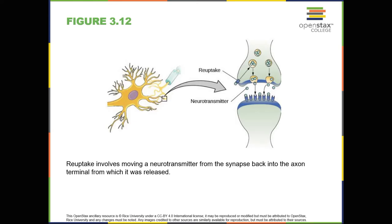As noted earlier, when the action potential arrives at the terminal button, the synaptic vesicles release their neurotransmitters into the synapse. The neurotransmitters travel across the synapse and bind to receptors on the dendrites of the adjacent neuron, and the process repeats itself in the new neuron, assuming that the signal is sufficiently strong to trigger an action potential. Once the signal is delivered, excess neurotransmitters in the synapse drift away, and then they are broken down into inactive fragments, or they are reabsorbed in a process known as reuptake. Reuptake involves the neurotransmitter being pumped back into the neuron that released it in order to clear the synapse, as shown in Figure 3.12. Clearing the synapse serves both to provide a clear on and off state between signals and to regulate the production of neurotransmitter, as full synaptic vesicles provide signals that no additional neurotransmitters need to be produced.